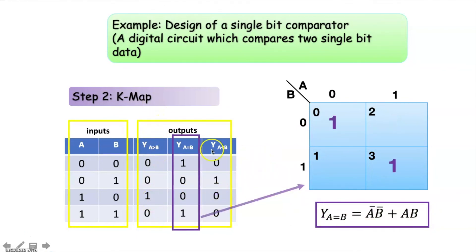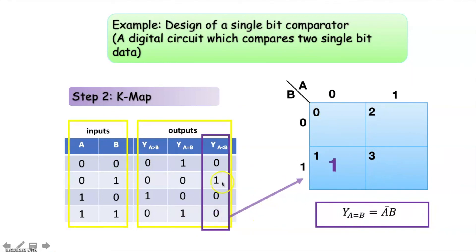Similarly, we can represent the next output column using the inputs in a K-map. Here we have two terms, so this is the expression for this column. Finally, we have the third output column, and this is the expression for that column.